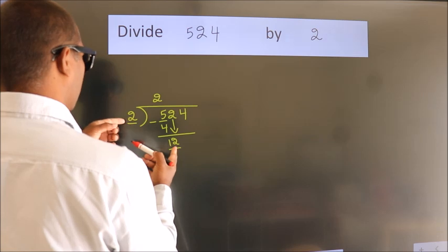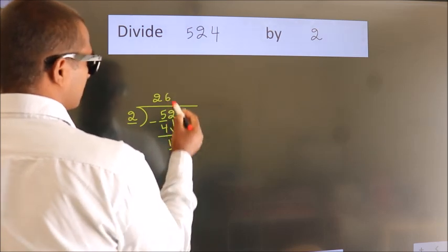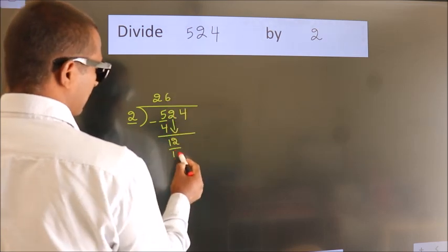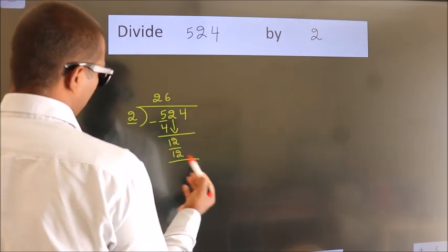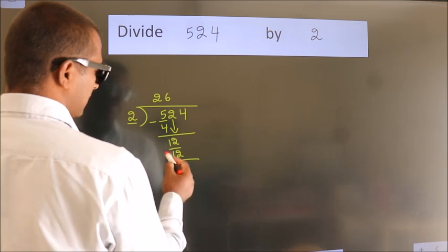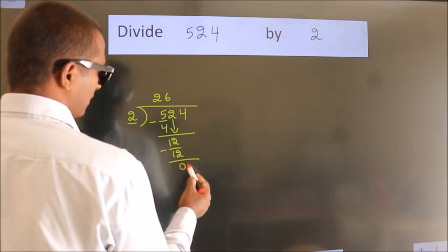When do we get 12 in the 2 times table? 2 sixes are 12. Now we subtract — we get 0.